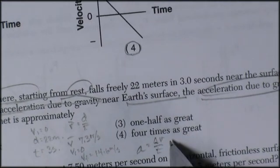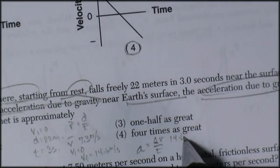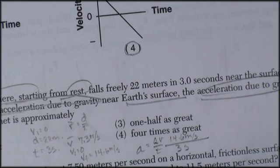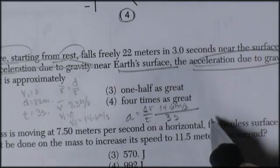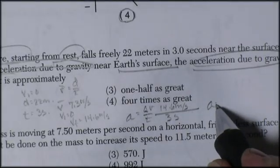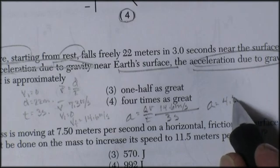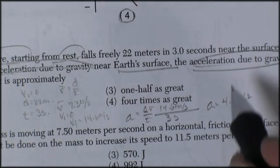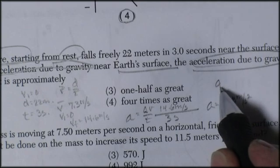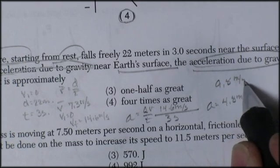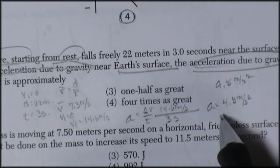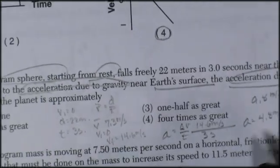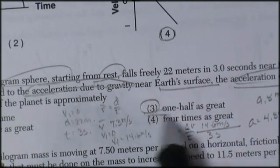Let's say our acceleration is change in velocity divided by time. So 14.6 meters per second divided by three seconds gives me an acceleration. And this gives me an acceleration of about 4.8 meters per second squared. Acceleration due to gravity on the Earth is 9.8 meters per second squared. So this is about half the acceleration due to gravity. Which would be choice three, one half as great.